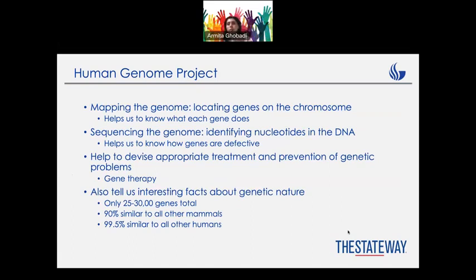For example, a specific DNA sequence like AGTC might code for eye color. Just imagine if we mapped and located that sequence — we would know exactly where it sits on the chromosome, and we could potentially decide what kind of traits our children would have.